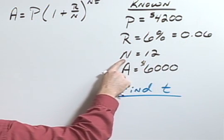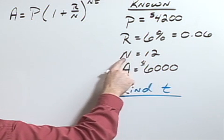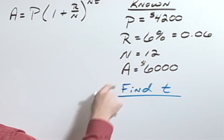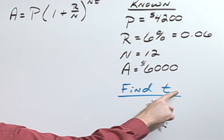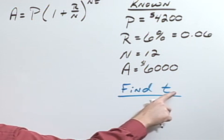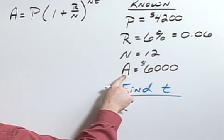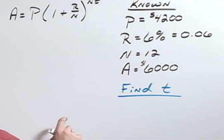Also the bank compounds monthly, so the number of compounds would be 12. The question then is to find the amount of time, or to find t, when the amount equals $6,000.